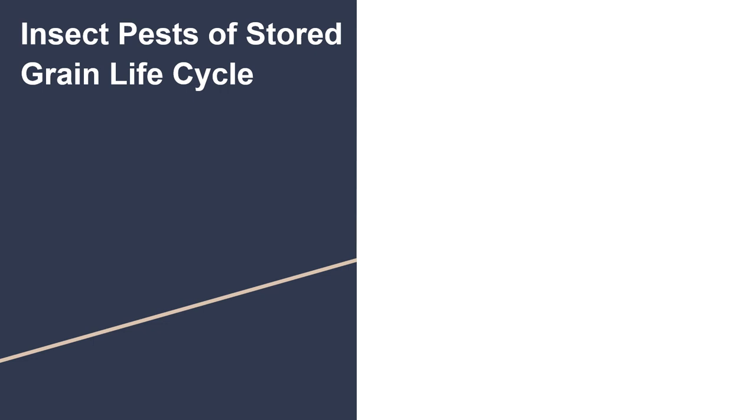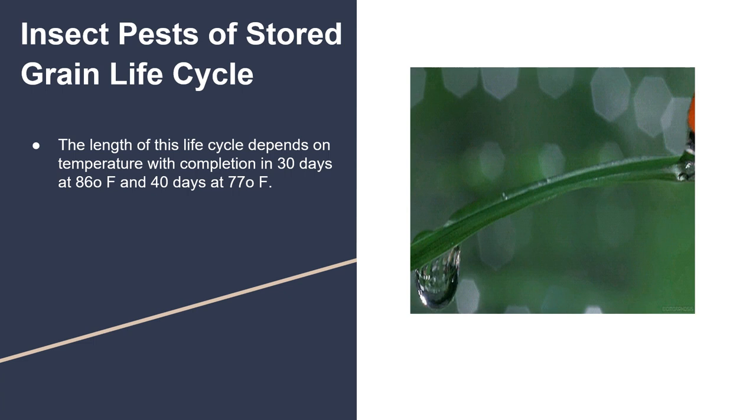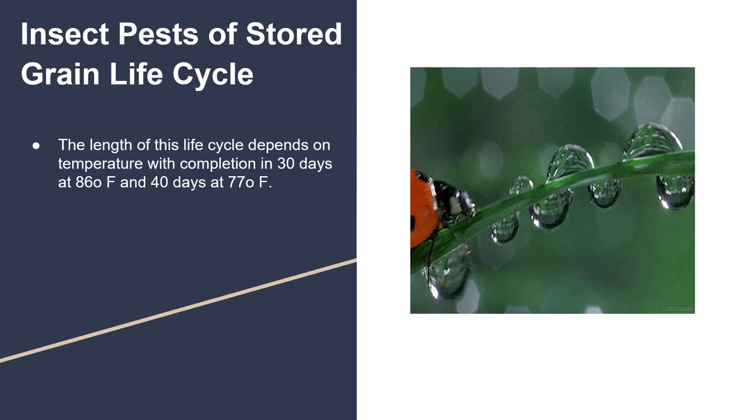Insect Pests of Stored Grain Life Cycle. The length of this life cycle depends on temperature, with completion in 30 days at 86°F and 40 days at 77°F.